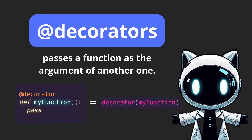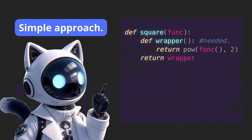the decorator above the definition of a function. This is the exact same thing as passing that function into that decorator. Now we want to have a simple approach so you can understand it. First we define our decorator as a function like we normally do. In this case we're going to square a number, so we pass this parameter — 'func', which can be anything, any name.